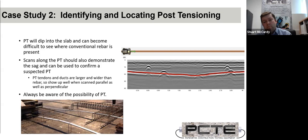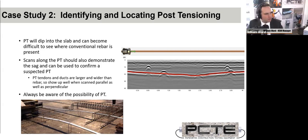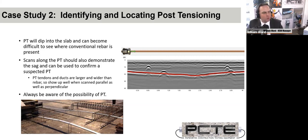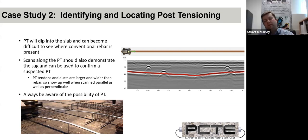A question from James at ALS: considering rebar has a diameter in the range of 10 to 36 millimeters, does GPR show the depth of the top of the rebar or the depth of the center? It's the top — that's where it changes from concrete to steel.